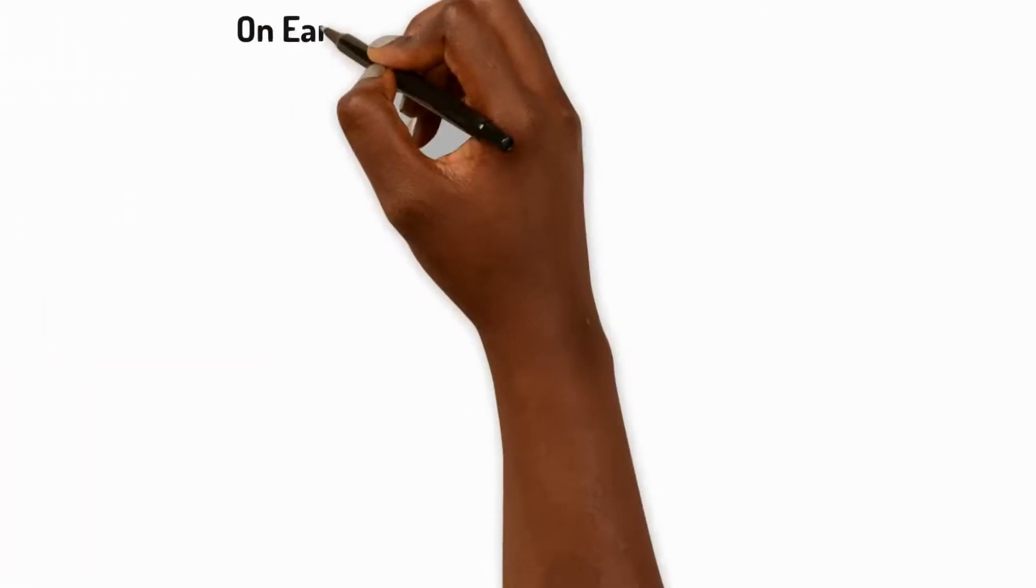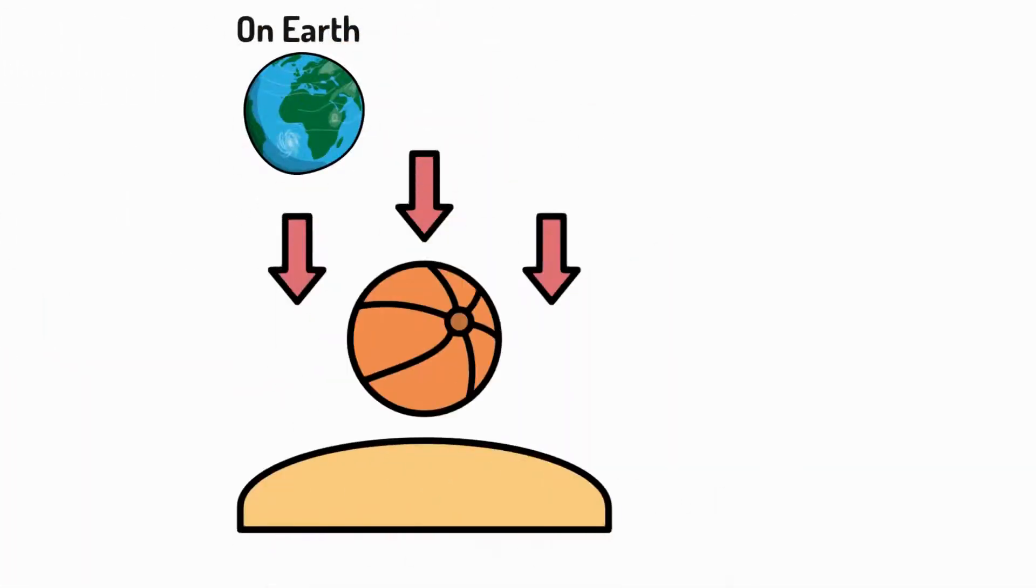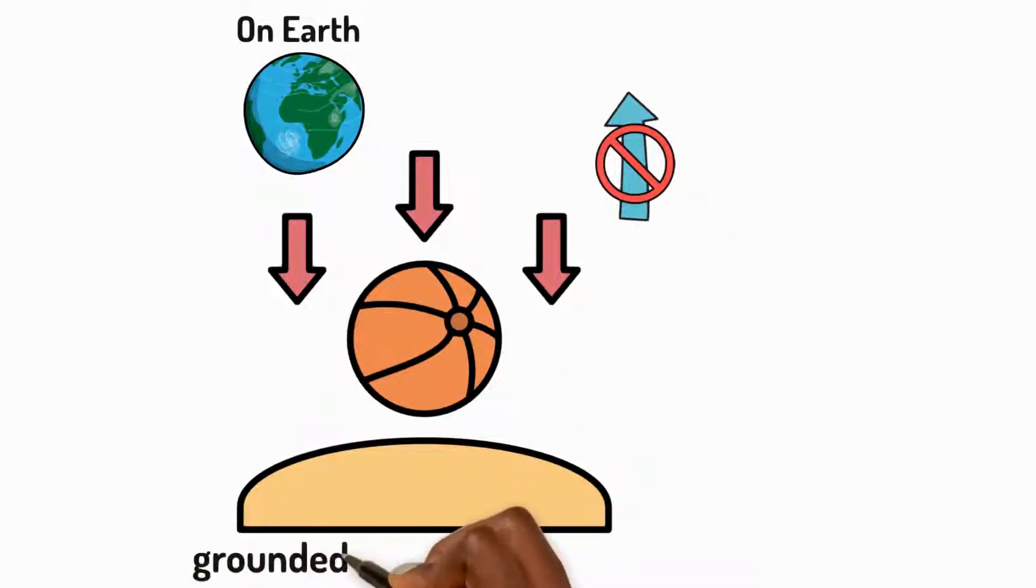On Earth, gravity pulls objects downwards. It causes things to fall instead of floating upwards, and it keeps us grounded instead of floating off into space.